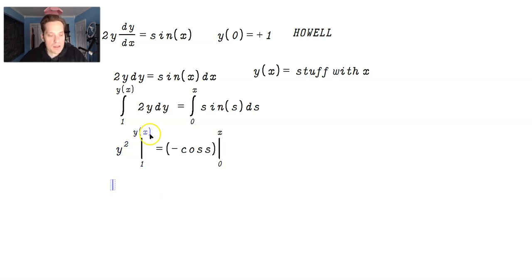Look what happens on the left side. Now you're going to plug in y(x), and look what you're going to get. You're going to get [y(x)]^2, which is what we are looking for. We're looking for y(x) = something with x, right? Minus, and then 1^2 = -cos(x). Now be careful at the next stage. It's going to be minus a negative cos(0). So look very carefully.